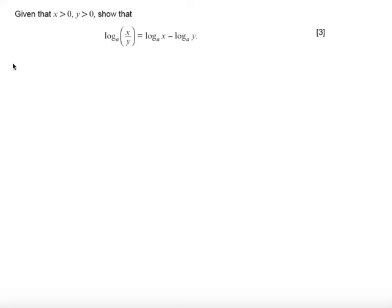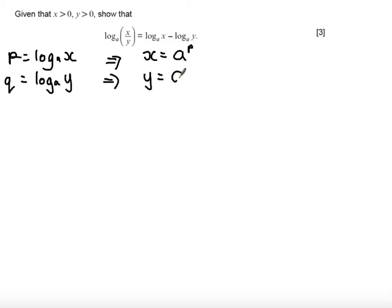The first thing to do in this question is to declare that we have a variable p and that is equal to log base a of x, and that leads us to the relationship that x is equal to a to the power of p. Next we state very similarly that q is equal to log base a of y, and so that leads to the relationship that y is equal to a to the power of q. That is the first step of any log proof, identifying these two relationships.